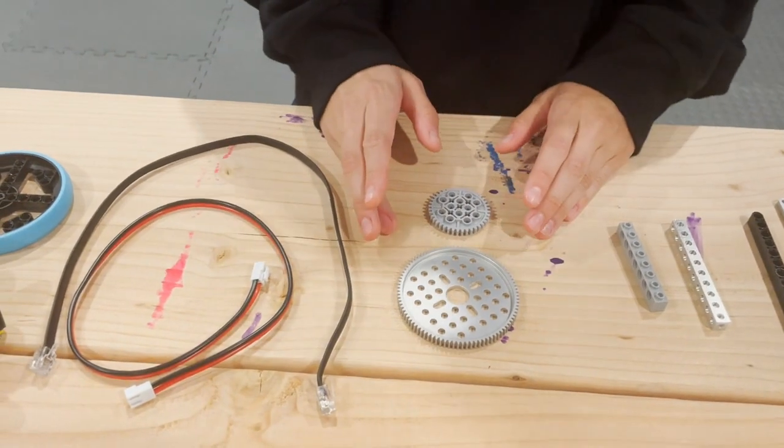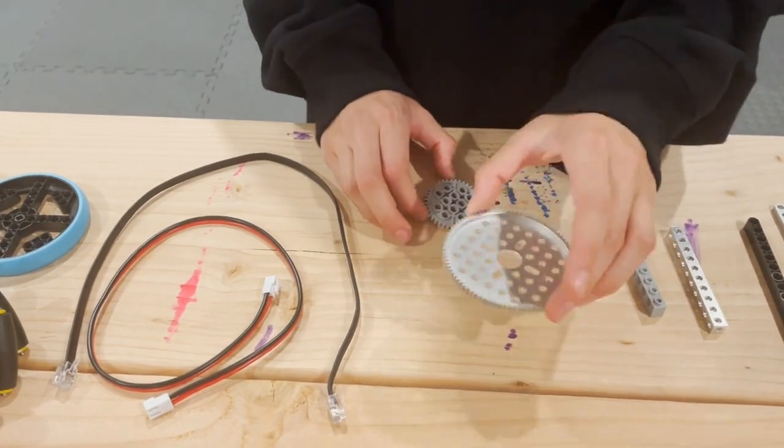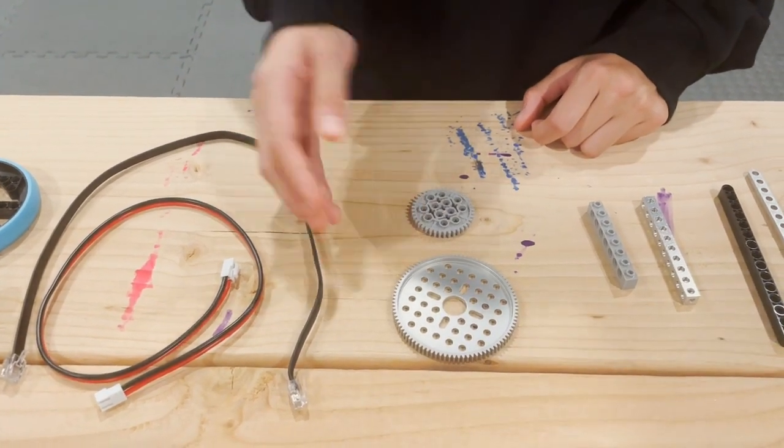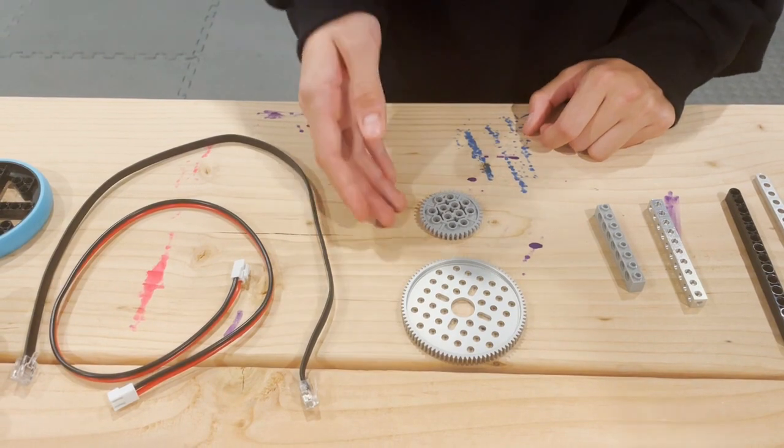After this, we have gears. This is an FTC gear and this is an FLL gear. The main difference is the size but they do the same thing.